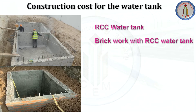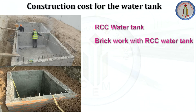Next, let's look at the cost for construction of the water tank. There are two types: an RCC water tank, and a brickwork with RCC water tank. In an RCC water tank, we provide double mat reinforcement and the wall is constructed with concrete. In a brickwork with RCC water tank, the outer layer is made with brick work and the inner layer with concrete — for example, a nine-inch wall where the outer four-and-a-half inches is brickwork and the inner four-and-a-half inches is RCC.